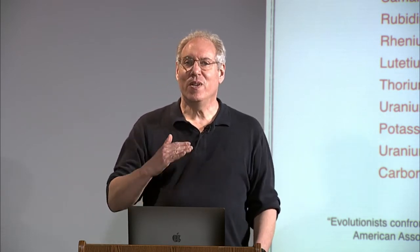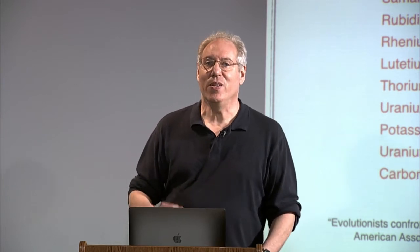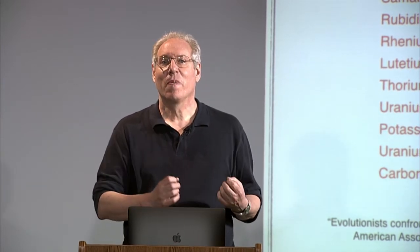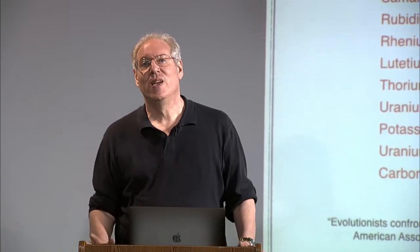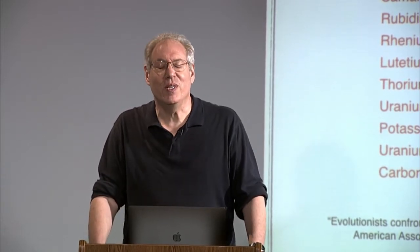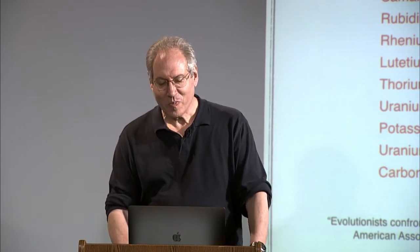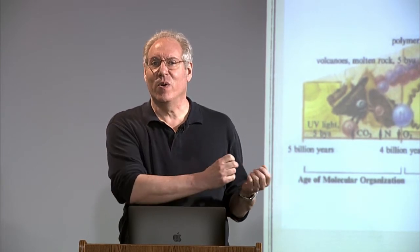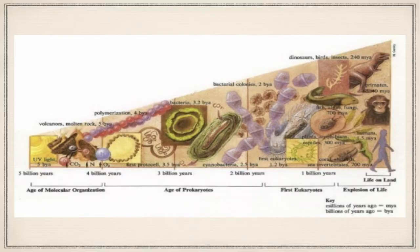Because we have different elements at different decay rates, and they're all giving us the same number for the age of the Earth and the age of fossils, we can be pretty sure that this is a reliable way to date things. We also find the sequence of fossils going from simpler to more complex. It would be astounding to find a human fossil four billion years old. We find simpler fossils dating earlier, and transition species falling exactly where you would expect them.